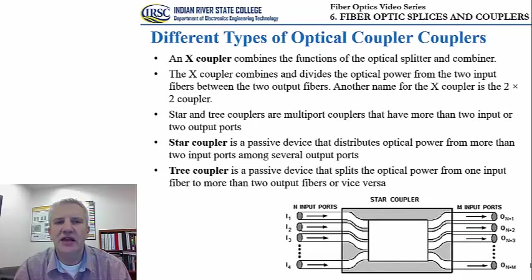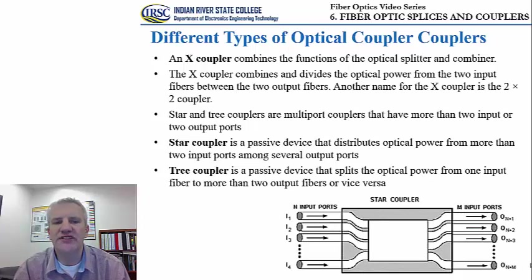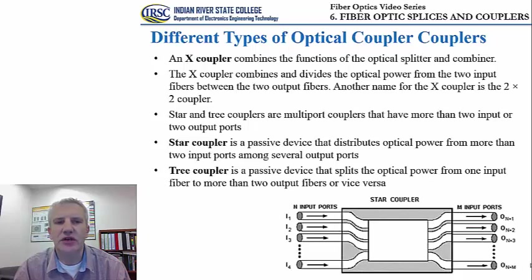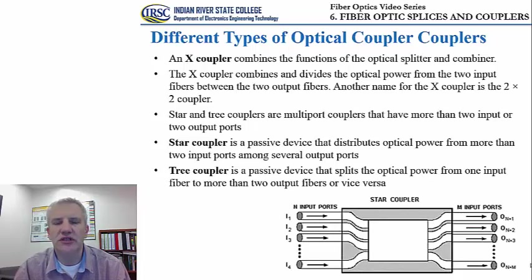X couplers combine the functions of an optical splitter and combiner, typically having two inputs and two outputs. Star and tree couplers are multi-port couplers with more than two input or output ports. A star coupler distributes optical power from more than two input ports into several outputs, while a tree coupler splits optical power from one input into more than two output fibers, or vice versa. The naming of these couplers is directly related to their configuration and the number of inputs and outputs.